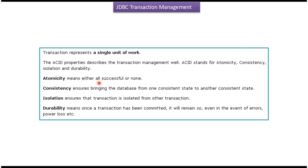Atomicity means either all operations are successful or none. Consistency ensures bringing the database from one consistent state to another consistent state. Isolation ensures one transaction is isolated from other transactions. Durability means once a transaction has been committed it will remain so, even in the event of errors and power loss. This is about transaction management — thanks for watching.